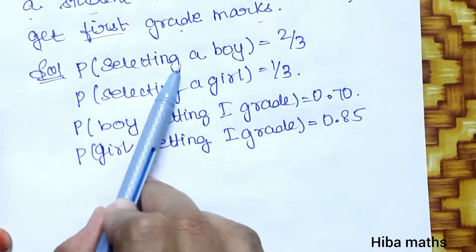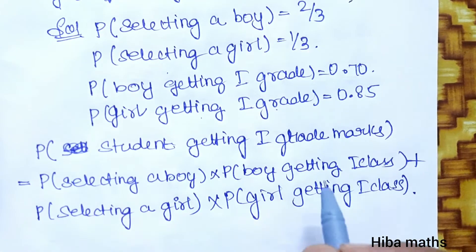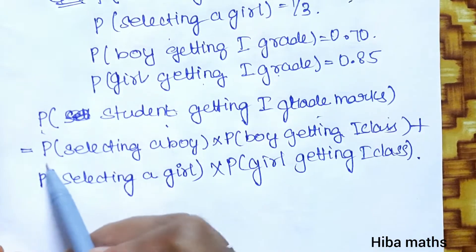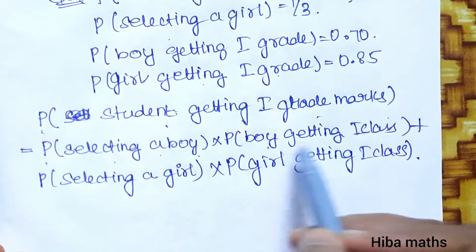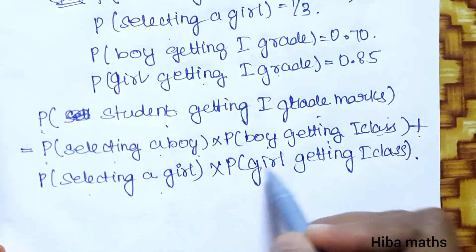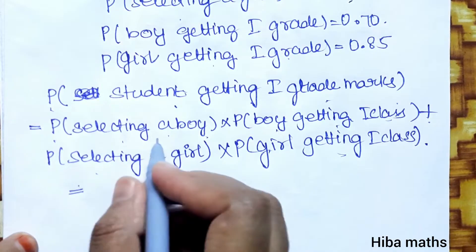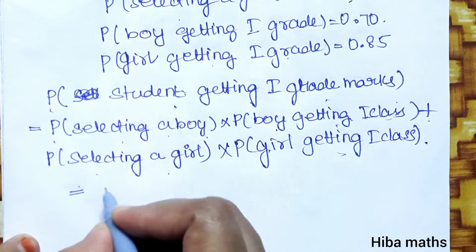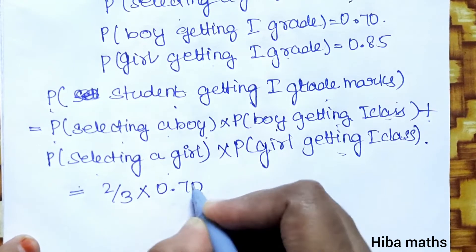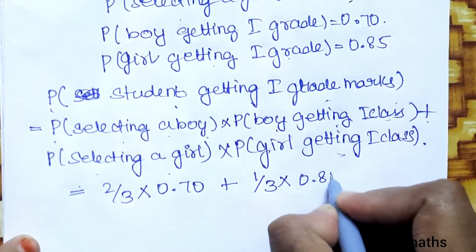The probability of any student getting first grade equals: P of selecting a boy times P of boy getting first class, plus P of selecting a girl times P of girl getting first class. That equals 2/3 times 0.70 plus 1/3 times 0.85.